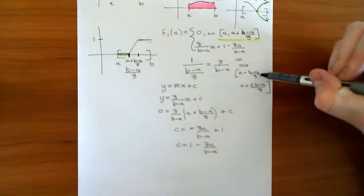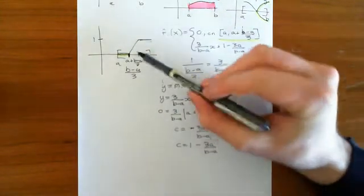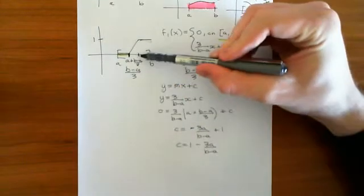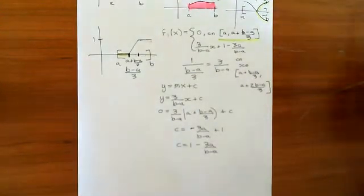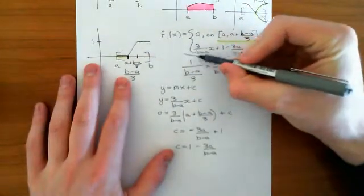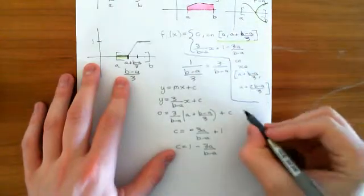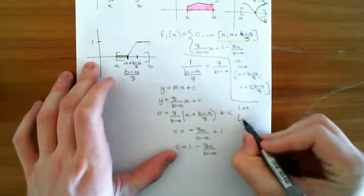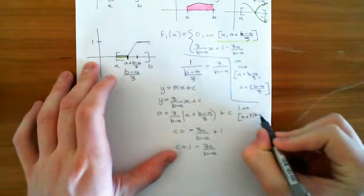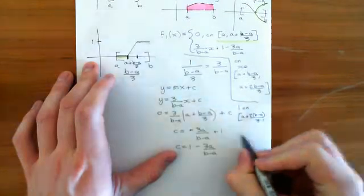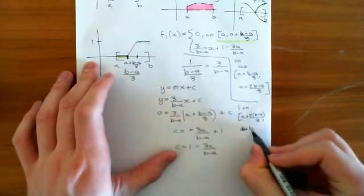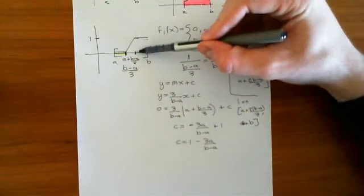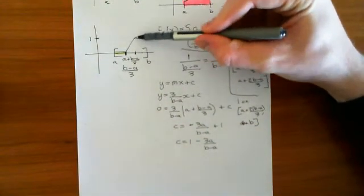The rising portion is on the interval from a plus (b minus a)/3 to a plus 2(b minus a)/3. And then we define it to be one on the final part of the interval, so on a plus 2(b minus a)/3 to b, it's going to be one.